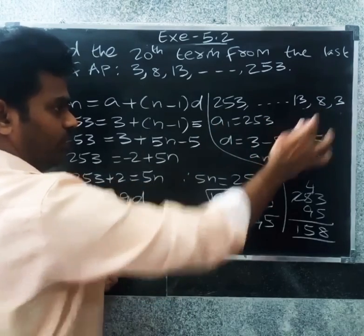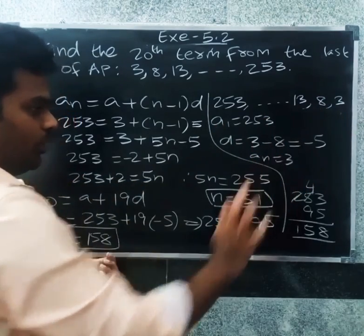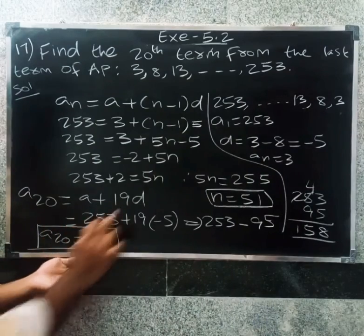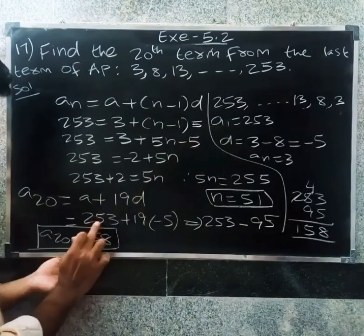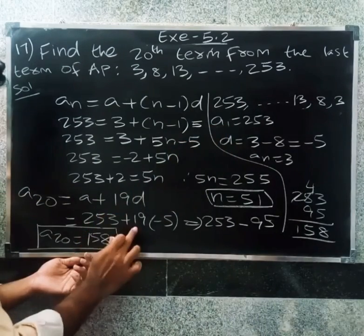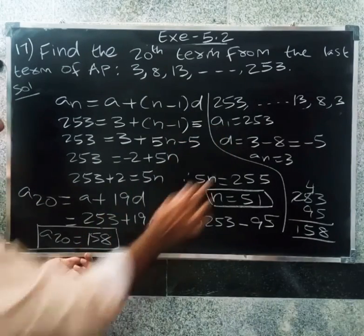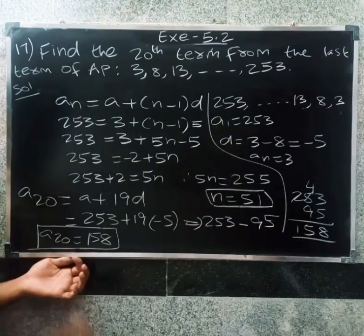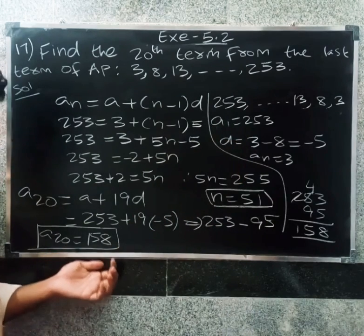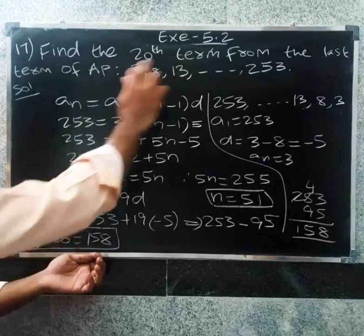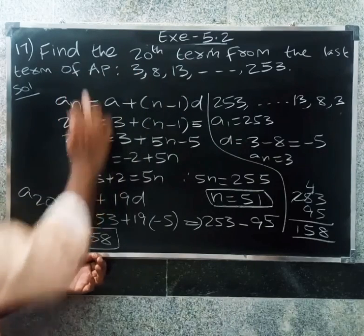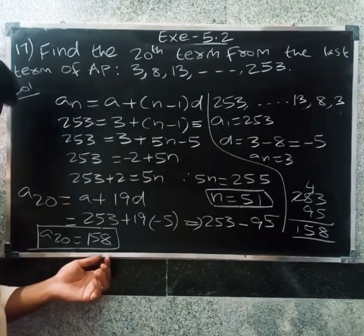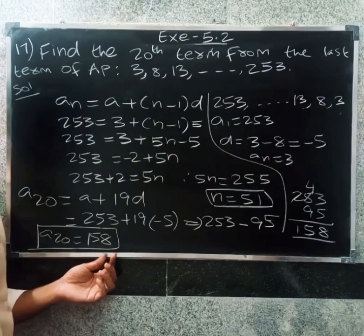So a20 equals a plus 19d, where a equals 253 and d equals minus 5. Therefore a20 equals 253 plus 19 into minus 5 equals 253 minus 95 equals 158. Therefore, the 20th term from the last term is 158. Okay, thank you.